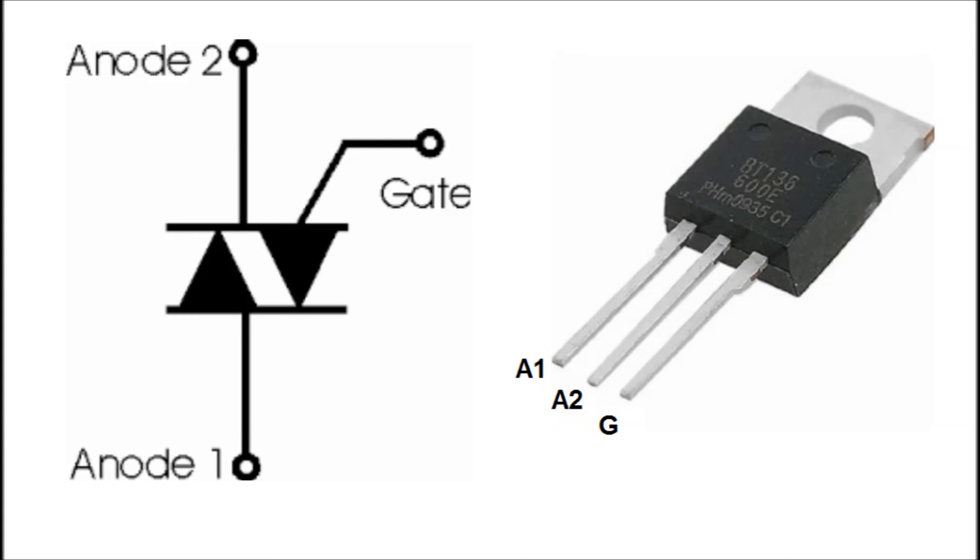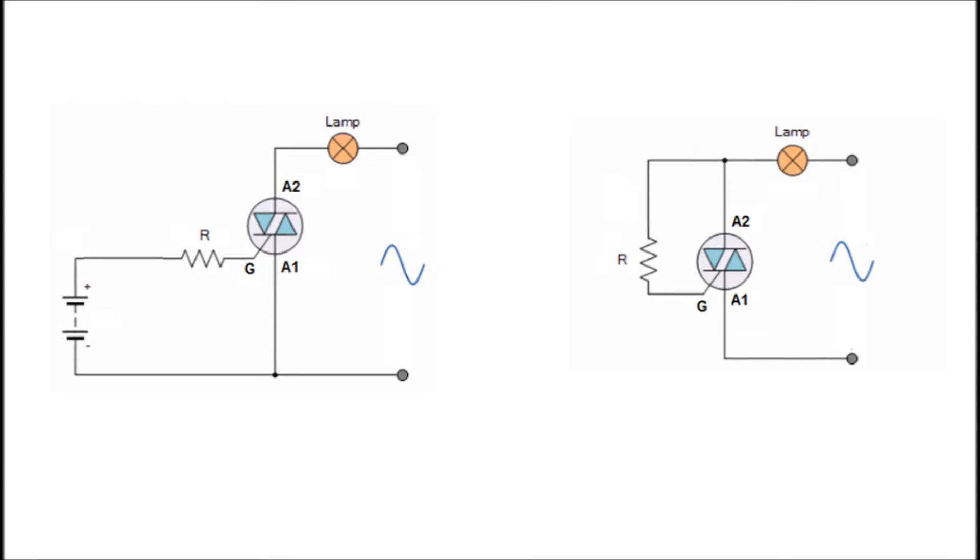Triac is a solid state AC switch that has three pins: Anode 1, Anode 2, and the gate. There are two ways to switching the triac.